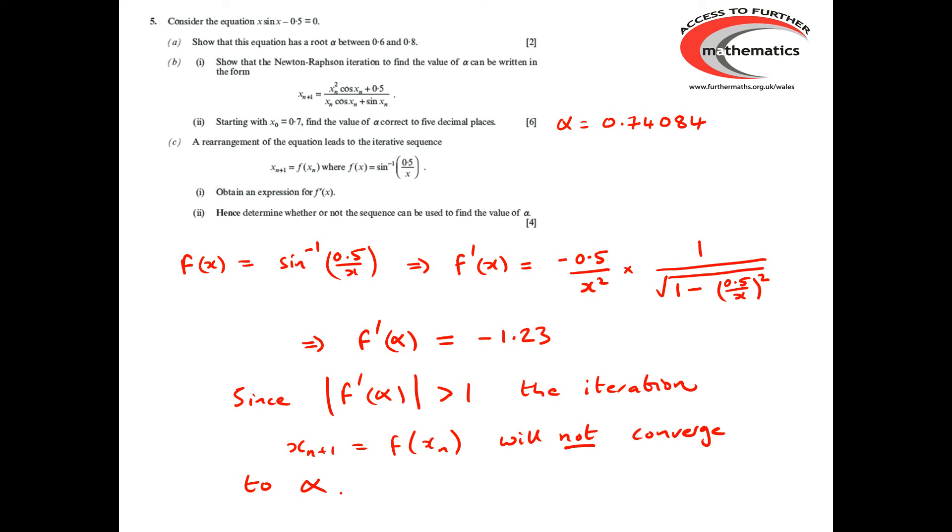So that gives us the first two marks. Then we need to do the subsequent simplification to get the third mark. For the second part of part b, there are two marks for using the iteration with the starting value of 0.7 and obtaining subsequent values to a suitable level of accuracy and then an answer mark for obtaining the value of alpha correctly to five decimal places. And for part c, we have two marks for finding the derivative of f, then two marks for explaining why that tells us that the iteration will not converge to alpha.